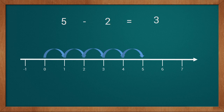We have to subtract 2 from 5. We will start from 5 and move backwards or to the left side to subtract 2: 1, 2. This way we reached 3. And 3 is our answer.